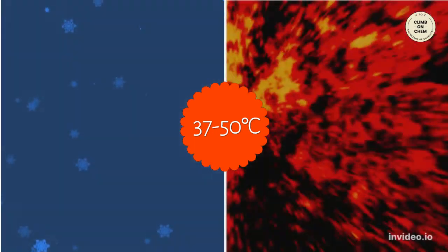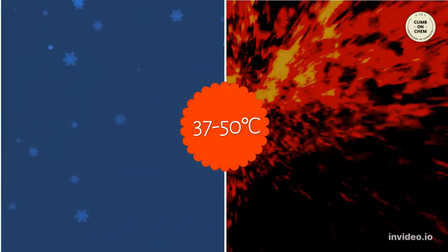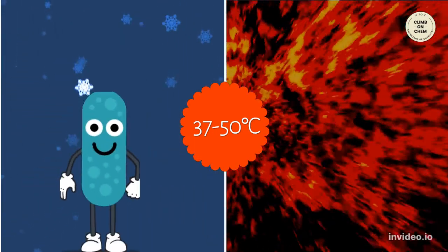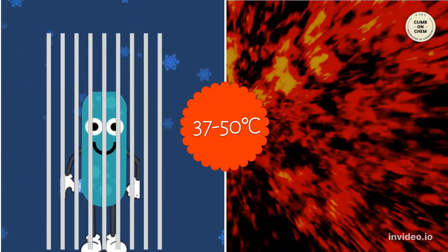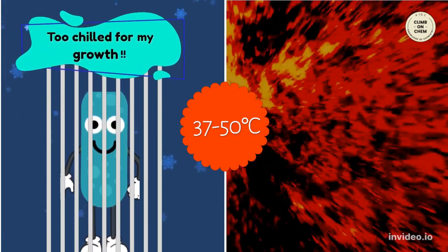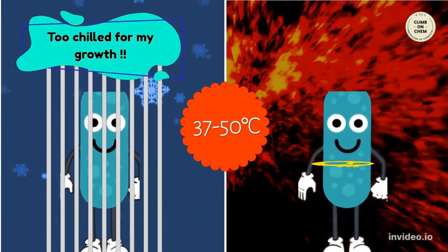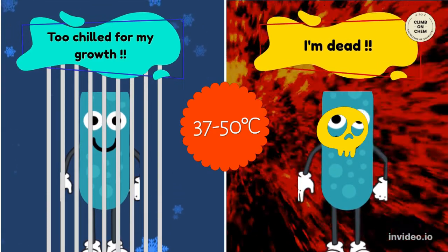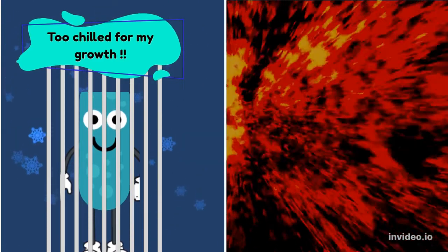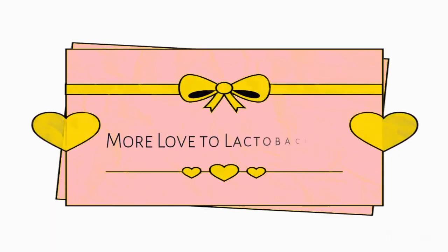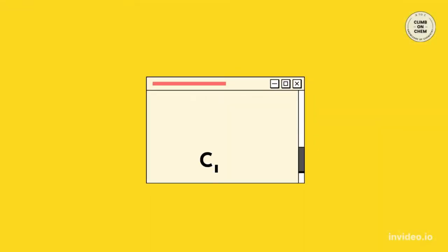One more question: why is this temperature range required to set the curd? Well, it's because below 37 degrees Celsius, lactobacillus multiply very very slowly. And at high temperatures, lactobacillus just cannot survive. More love to lactobacillus for making such delicious and creamy curd for us. Thanks for watching.